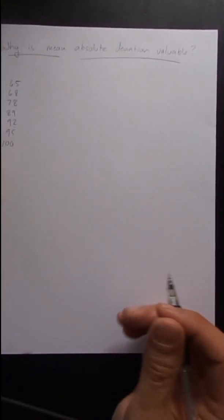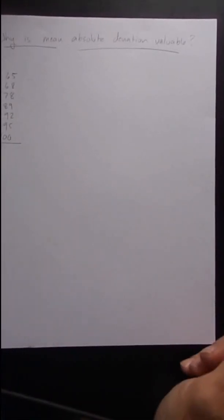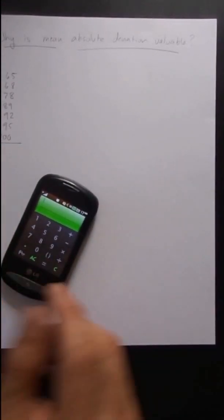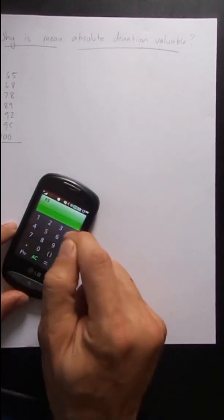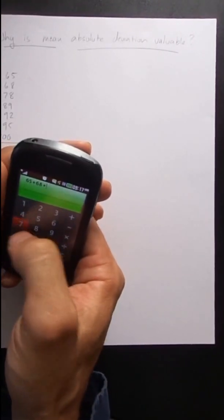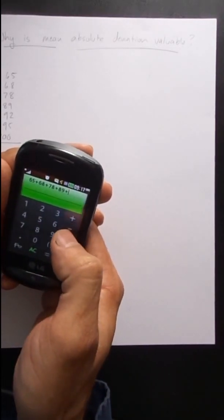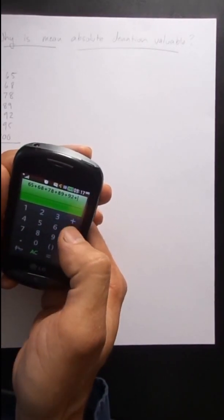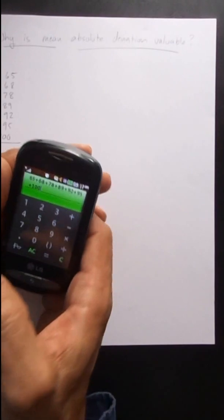What's the average there? Well, that's easy. We add them all together and then divide by seven. So here we go: sixty-five plus sixty-eight plus seventy-eight plus eighty-nine plus ninety-two plus ninety-five plus a hundred.